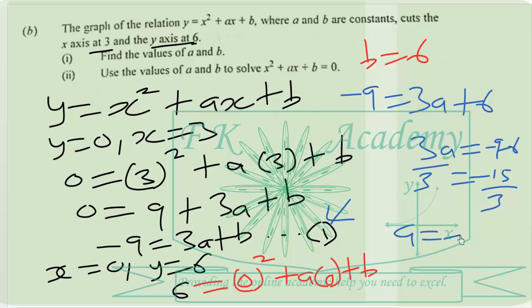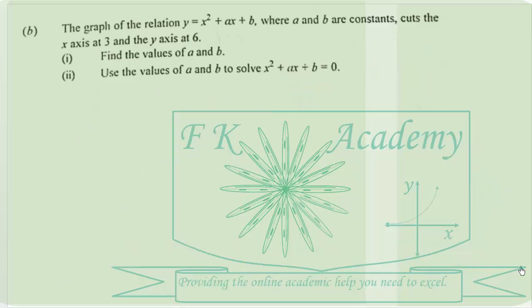Dividing through by 3, we get a equal to negative 5. So a is negative 5 and b is 6. The equation becomes x squared minus 5x plus 6 equals zero. We want to solve this equation.